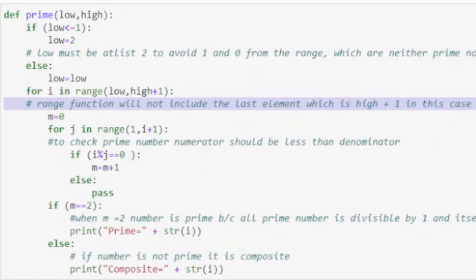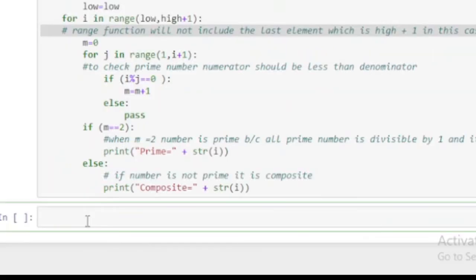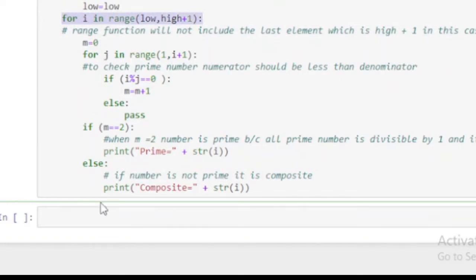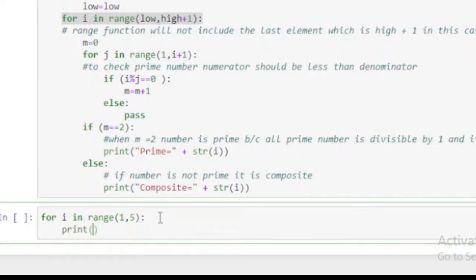For I in range low comma high plus 1. We say high plus 1 because range function will not include the last element which is high plus 1 in this case. So our last element for this range will be high, not high plus 1.